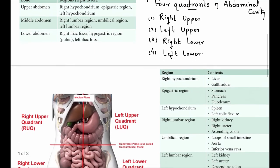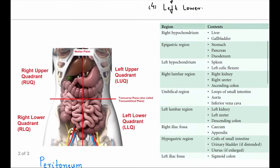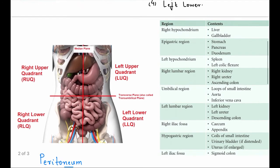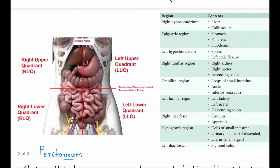Here, four quadrants of abdominal cavity: right upper, left upper, right lower, left lower. Now you can see which organs. So the right hypochondrium here.